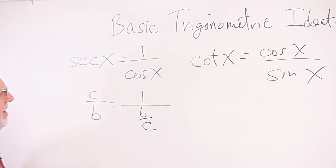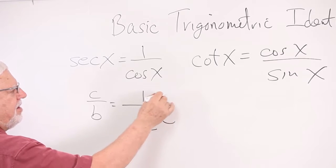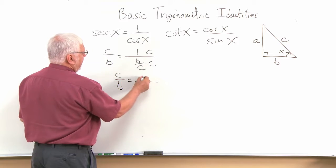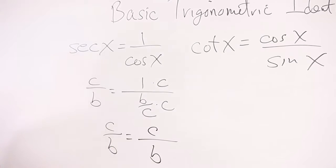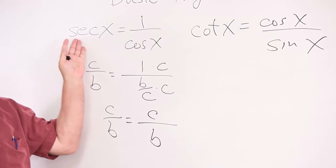And then a little bit of algebra says we could multiply the numerator, or arithmetic really, the numerator and the denominator by c. And then we could end up with, get rid of that complex fraction. We would have c over b. And there it is. This is the same. So those are really two of the very same things, just with a different name.